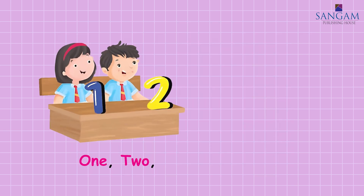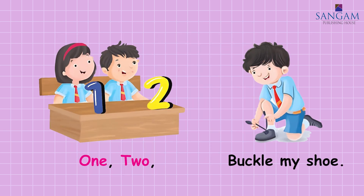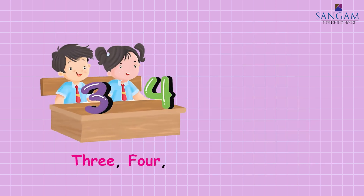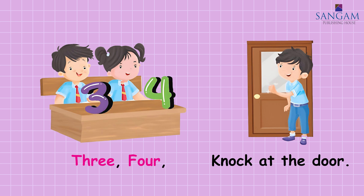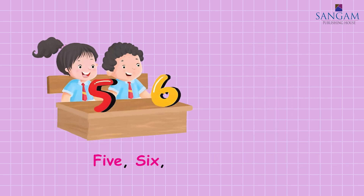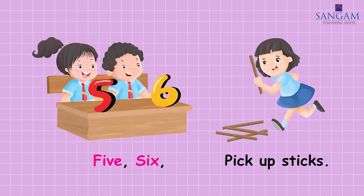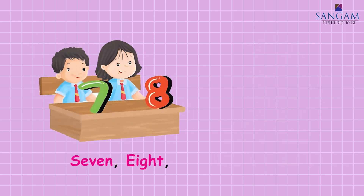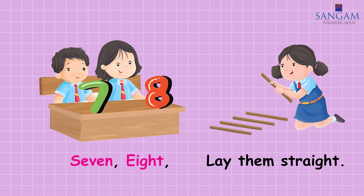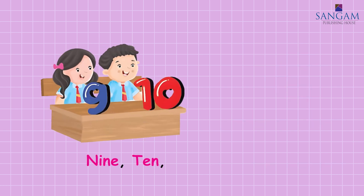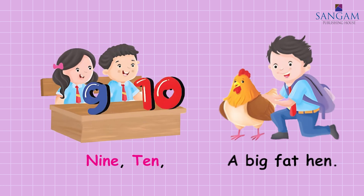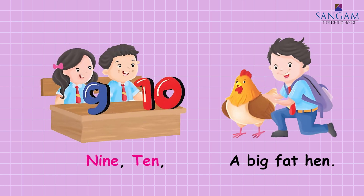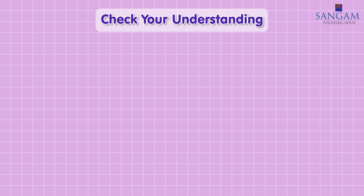One, two, buckle my shoe. Three, four, knock at the door. Five, six, pick up sticks. Seven, eight, lay them straight. Nine, ten, a big fat hen. Check your understanding.